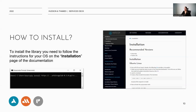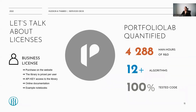To install Portfolio Lab, you need only to follow the instructions in the documentation for your specific operating system. We have invested over 4,000 hours of R&D into constructing Portfolio Lab. It has 12 algorithms and 100% code coverage. Portfolio Lab can be purchased on the website and is priced per user. A unique API key will provide you access to the library, and online documentation and example notebooks are accompanied by your purchase.